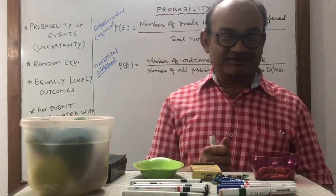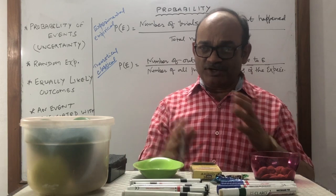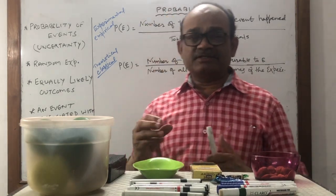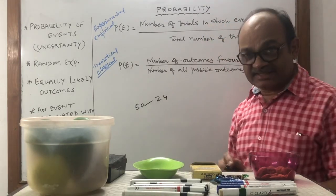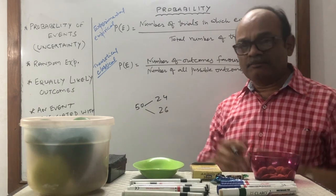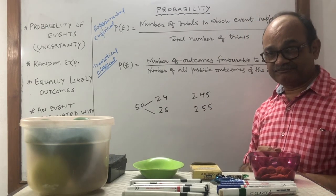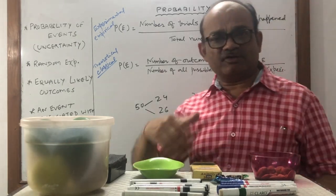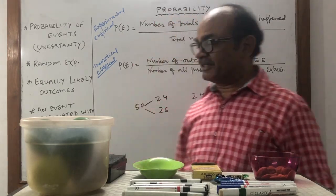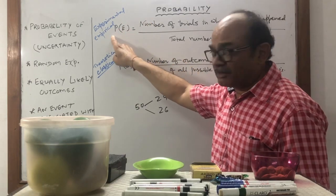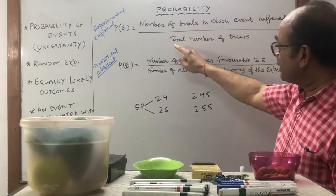Hello children, today we are studying a very interesting topic: probability. As you know from Class 9, the probability you completed is experimental. Suppose you throw 50 coins simultaneously — out of 50, maybe 24 are heads and 26 tails. If you increase to 500, it may be 245 and 255. At 1000, 2000, or 5000 it approaches 50-50, heads and tails half and half. This is called empirical or experimental probability. The formula was: probability equals number of trials in which the event happened divided by total number of trials.